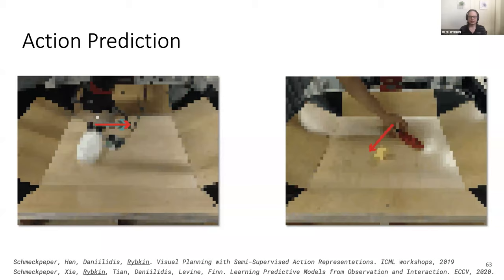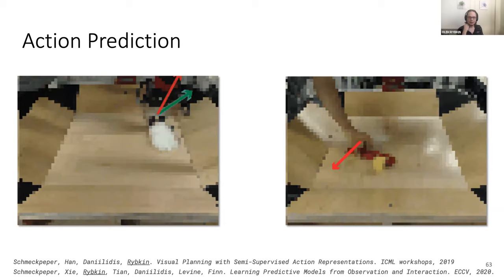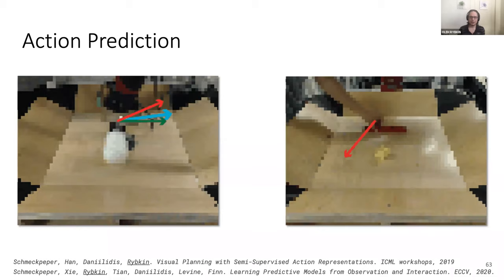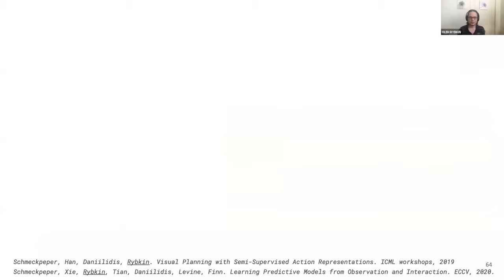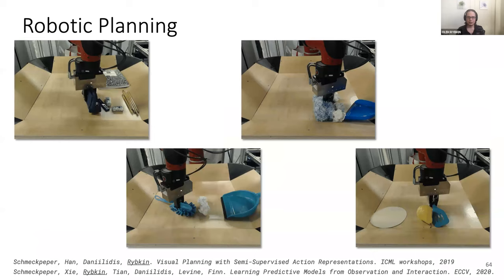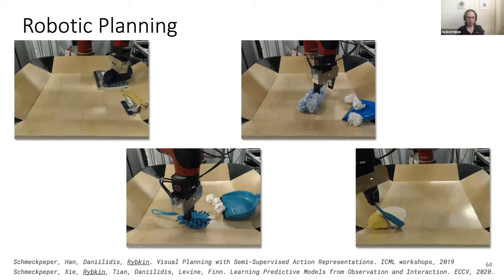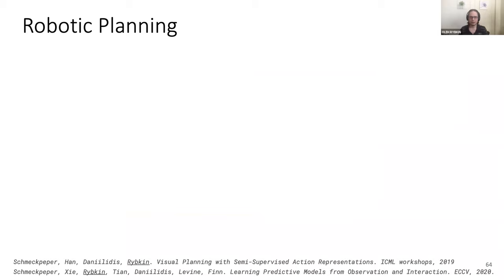Is this ability to learn from human data useful in practice for improving robotic manipulation? It actually is. The human is doing something tricky: using a tool. The random robotic data does not contain many tool-use instances since random behavior is unlikely to use a tool. But by learning from both robot and human data, the robot learns the physics of tool use and uses it for planning. Results show the robot solving tasks that require pushing objects where tool use is optimal, outperforming baselines that do not learn from human data.